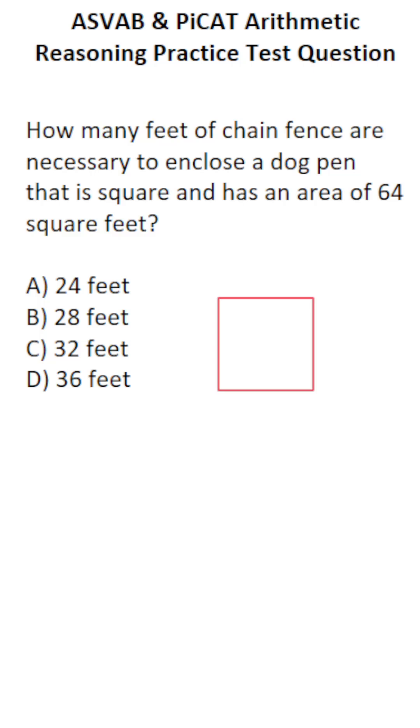This arithmetic reasoning practice test question for the ASVAB and PiCAT says: How many feet of chain fence are necessary to enclose a dog pen that is square and has an area of 64 square feet?